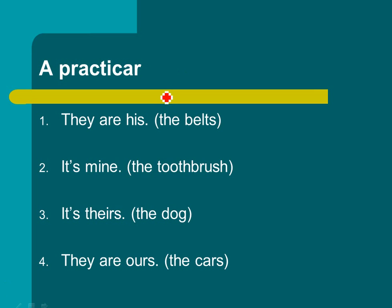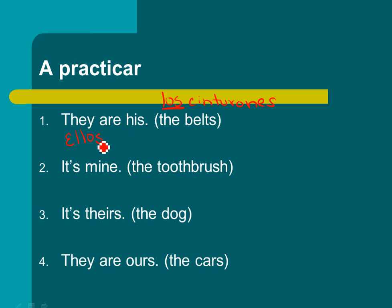Here's number one: the belts — los cinturones. Cinturones are masculine and plural. So 'they' — ellos — because we're talking about the belts, masculine and plural — 'are' son. And 'his' — is it mío, tuyo, suyo, nuestro, vuestro, or suyo? It is suyo. But how many belts? More than one. So suyos. Ellos son suyos.